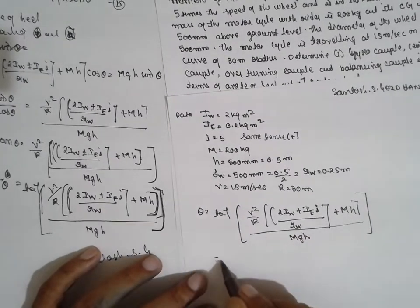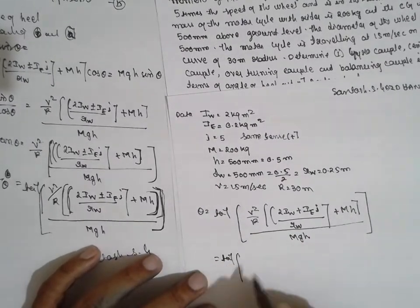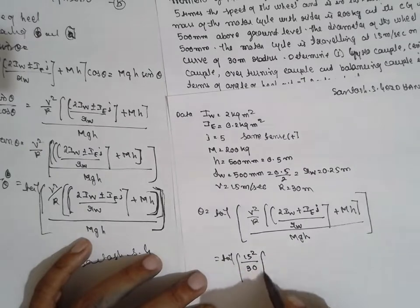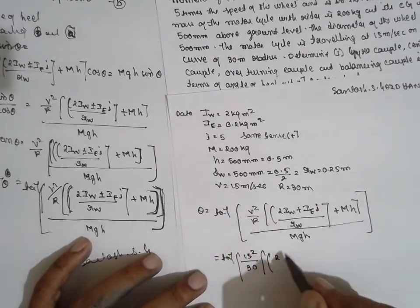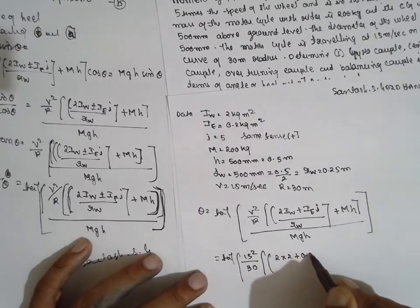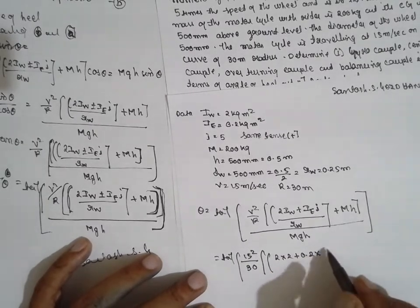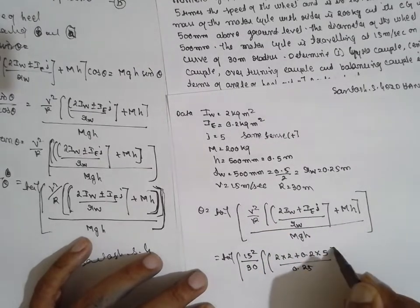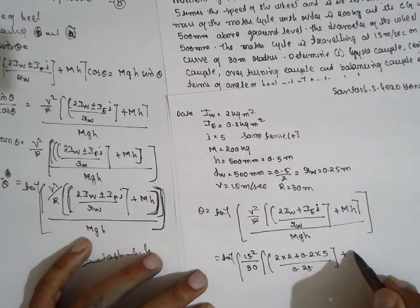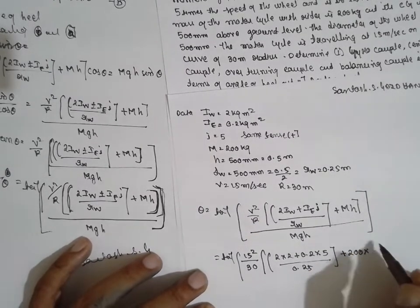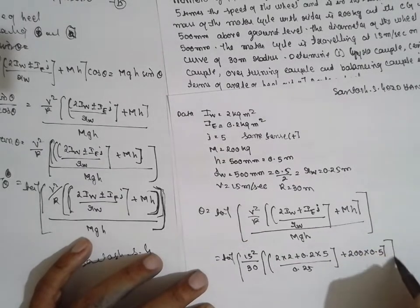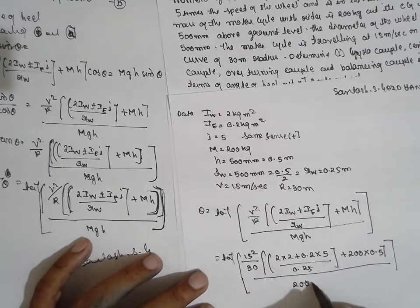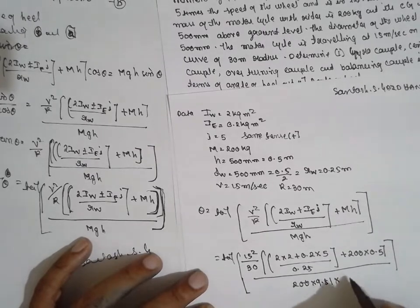What is V? Tan inverse, V is 15 square divided by r, 30. 2Iw is 2 kg, plus IE is 0.2 into i is 5, small i is 5, divided by rw, 0.25. Close the bracket. Plus m is 200 into h is 0.5, divided by m is 200 into 9.81 gravity, into h is height 0.5.